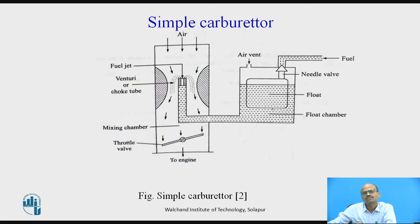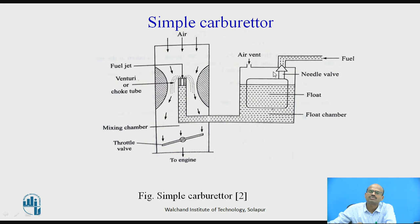This is the schematic diagram of the simple carburetor. The float chamber is taken. In the float chamber, the petrol level is maintained constant. For that purpose, this float is used — a hollow device sealed from all sides. On the top side of the float, there is a needle valve connected to the fuel pipe, which is connected to the fuel tank. Depending upon the float level, the fuel is allowed or stopped depending upon the petrol level. If the level increases, it will be stopped; if it flows downward, more fuel enters the float chamber.